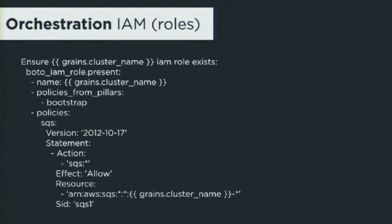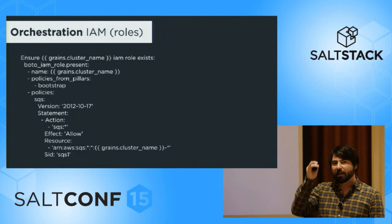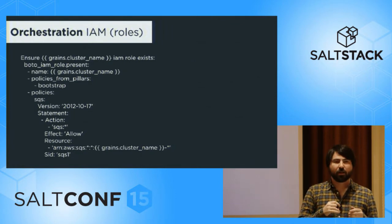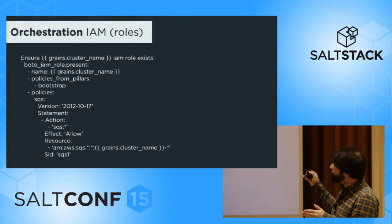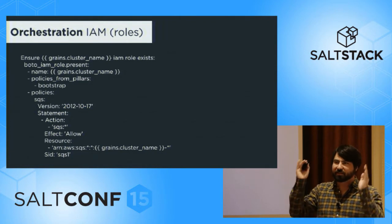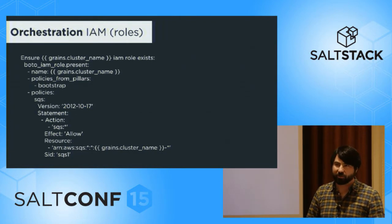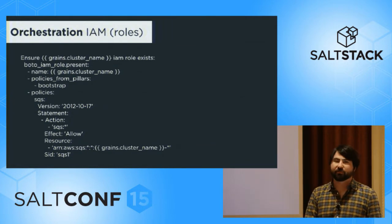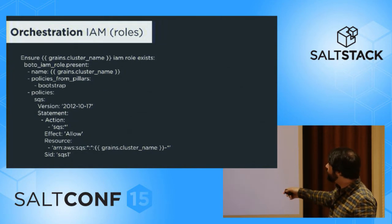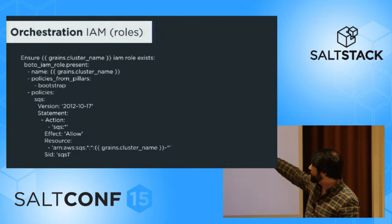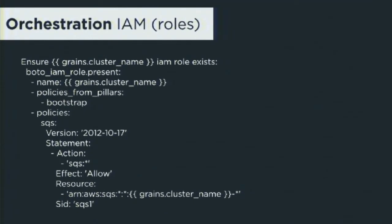Let's go over an example of how we actually do the orchestration. We do this all through Salt states that run in sequential order, and they're all completely templatized. For a particular service, everything has a template that uses the grains. We generally try to use cluster names so that everything has the exact same name — cluster name is the service, service instance, and region. If we call the same template for staging and production, the exact same infrastructure comes up. If you make changes and call it again, it just modifies your infrastructure so that both look exactly the same. Similarly, if you switch regions, same concept. This is an example of an IAM role. In this specific case, we are giving this cluster the ability to do everything for SQS queues prefixed with its own cluster name.